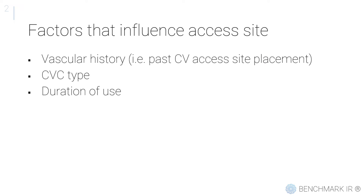There are a number of factors that influence access site. For one, vascular history — has a patient undergone surgery that has altered normal anatomy, or do they have vascular disease that precludes access to certain sites? Two, what is the intended use of the central venous access and what catheter type is required? And three, how long will the access be required? These topics will be discussed in greater length in the follow-up video by Dr. Cooper.